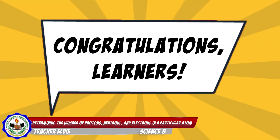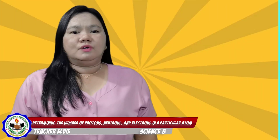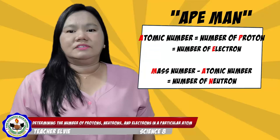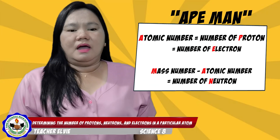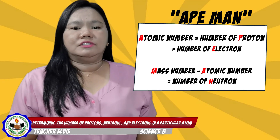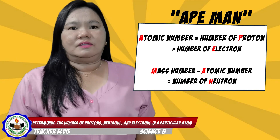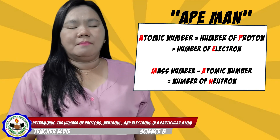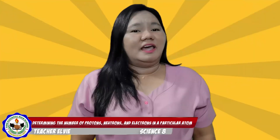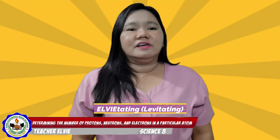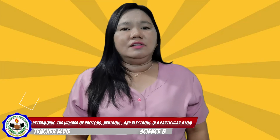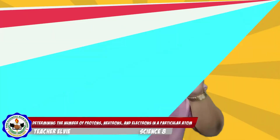Congratulations to those who got a perfect score! Always remember the Ape-Man mnemonic in identifying the number of protons, electrons, and neutrons of a particular atom. Atomic number is always equal to the number of protons, which is always equal to the number of electrons, while mass number minus atomic number is always equal to the number of neutrons. Today has been an LV-tating learning experience. See you next time as we learn and verify knowledge only with Teacher LV. Goodbye!